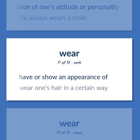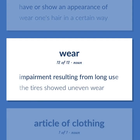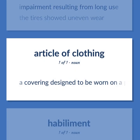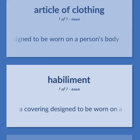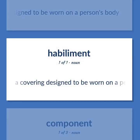Have or show an appearance of — wear one's hair in a certain way. Impairment resulting from long use — the tires showed uneven wear. A covering designed to be worn on a person's body.